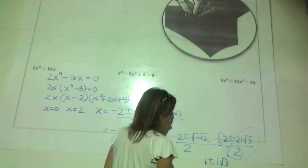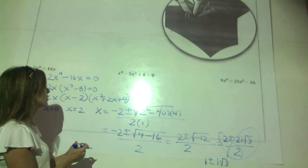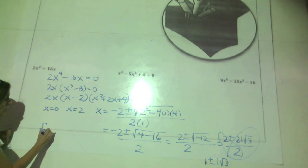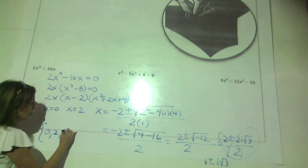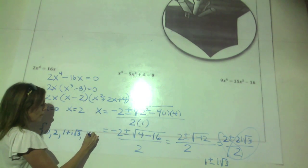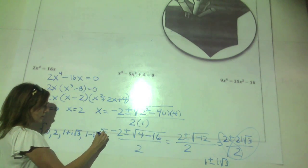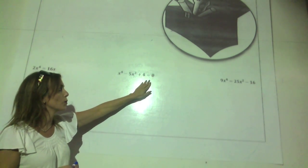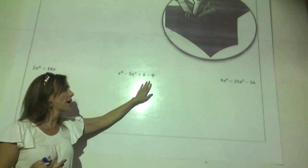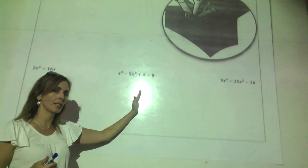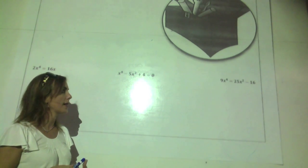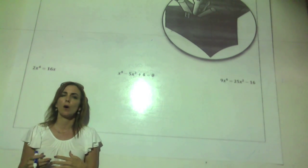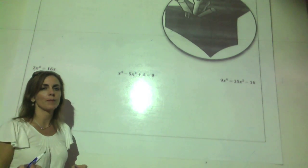For this example, we start the same way — bringing everything to one side of the equal sign to get 2x to the 4th minus 16x equals zero. Applying the first rule of factoring, we look for a GCF. With these two terms, we can pull out 2x, giving 2x times x cubed minus 8 equals zero. Now it looks like x cubed minus 8 is a difference of cubes, so we use the sum and difference of cubes pattern.